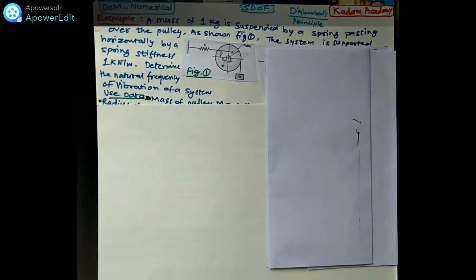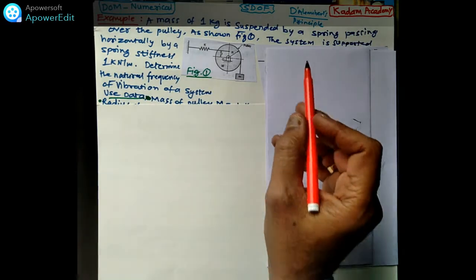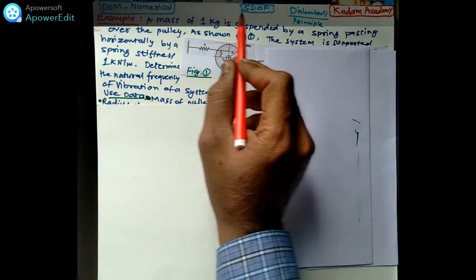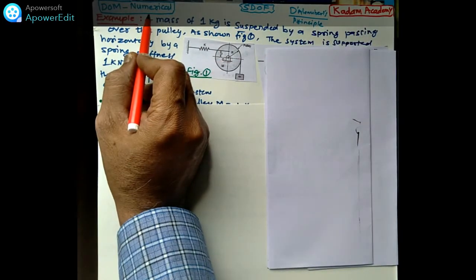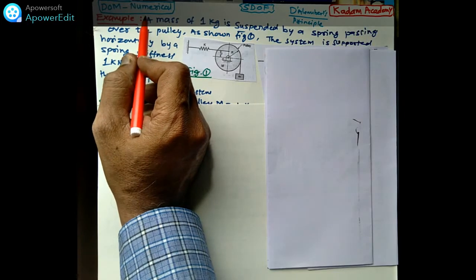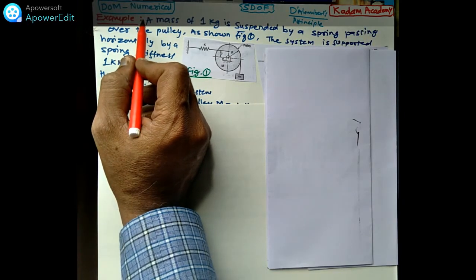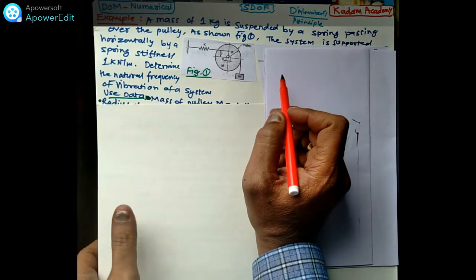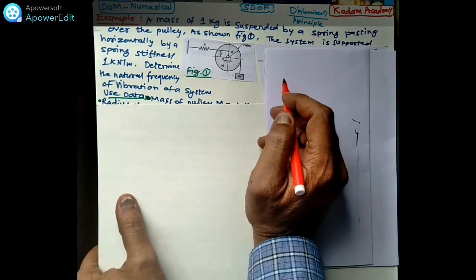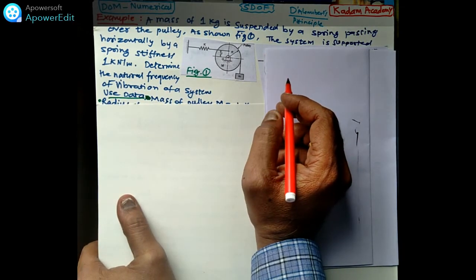Welcome to YouTube channel Kadam Academy. This is the second numerical on the D'Alembert's Principle — a DOM numerical. We have a number of examples solved on this YouTube channel. Please go through the various numericals which are useful for solving gate examinations.